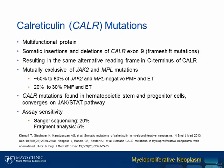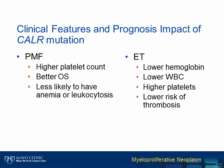CALR insertion-deletion mutations can be detected using different methodologies: Sanger sequencing has a sensitivity of about 20%, whereas fragment analysis gives a sensitivity of approximately 5%. MPN patients with CALR mutation exhibit distinctive clinical features. In PMF patients, favorable overall survival has been reported by multiple groups; they usually present with higher platelet count and are less likely to have anemia or leukocytosis. In ET patients, CALR-positive cases have a lower risk of thrombosis, higher platelet count, and lower hemoglobin and white blood cell count.